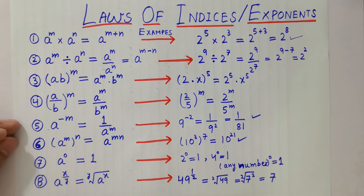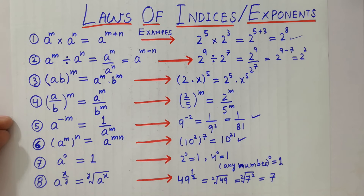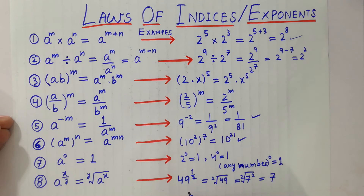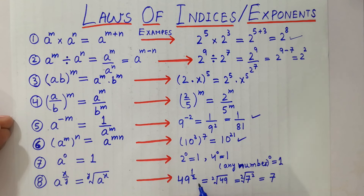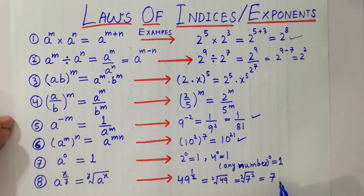The last law: a raised to the power x over y is equal to the y-th root of a raised to the power x, because 1 over y can be written as a y-th root. For example, 49 raised to the power 1 over 2 can be written as the square root of 49. Since 7 times 7 equals 49, the 2s cancel and we get 7 as our answer.